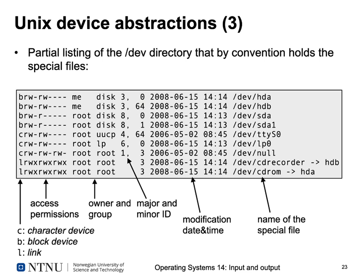The SCSI disk /dev/sda has major number 8 and minor number 0. The first partition /dev/sda1 gets minor number 1. A second SCSI disk /dev/sdb would have gotten major/minor 8/64, and its first partition would be 8/65. The serial driver has major 4 and minor 64, the printer has major 6 and minor 0, and /dev/null has major 1 and minor 3.